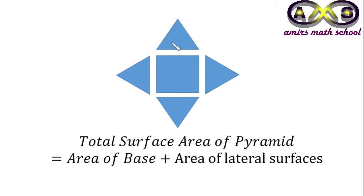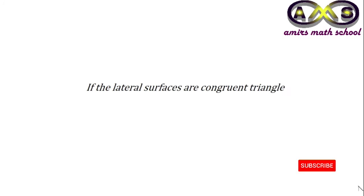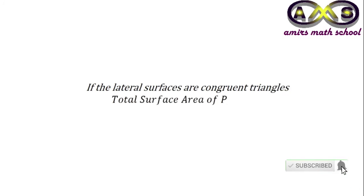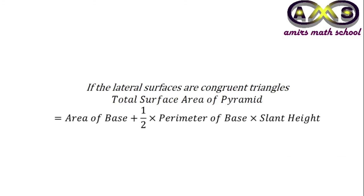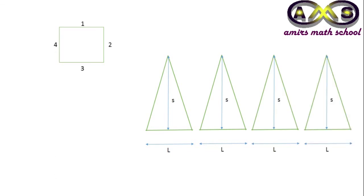If we separately find the area of the lateral surfaces and the area of the base, their sum gives the total surface area. If the lateral surfaces are congruent triangles, then the total surface area equals the area of the base plus half the perimeter of the base times the slant height. This base has four sides, so we get four lateral surfaces.